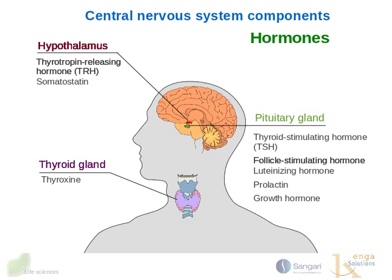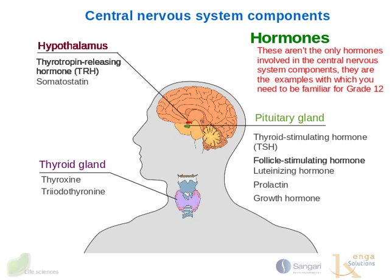The thyroid gland produces thyroxine, also known as T4, and triiodothyronine, also known as T3. These are not the only hormones involved in the central nervous system components of the endocrine system — they're examples, and they're the examples that you need to be familiar with for your grade 12 syllabus, and that's why we're covering them here.